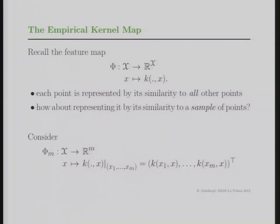Let's start with this. I think there was a question related to this before. So remember the feature map that we had before. If we represent a point by a kernel function set on that point — if we think of the kernel function as a similarity measure — it gives us the similarity between the two arguments that we're plugging into the kernel. Now if we represent one point by a kernel function evaluated at that one point with the second argument open, it basically means we represent this point in terms of its similarities to all other possible points.